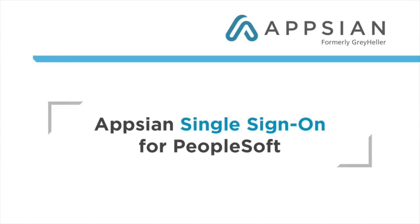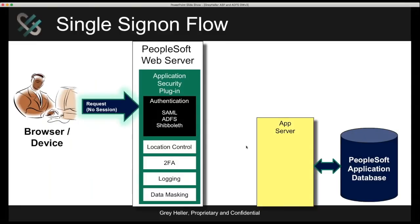Let's talk more specifically about the single sign-on flow. When we talk about single sign-on, what's really happening is the user is going to make an unauthenticated request into PeopleSoft. Going back to our architecture, we can see that because we understand, being inside the PeopleSoft web server, whether that's an authenticated request or not. We can see the PS token, for example, and we know whether or not this person is already authenticated.